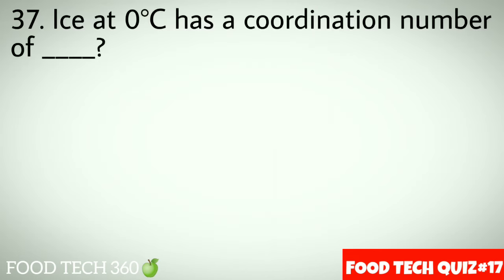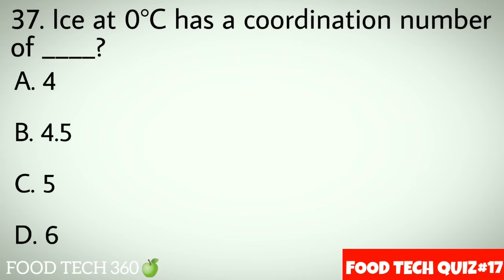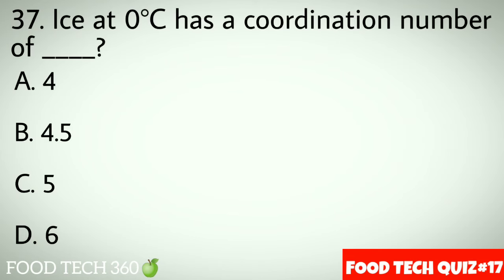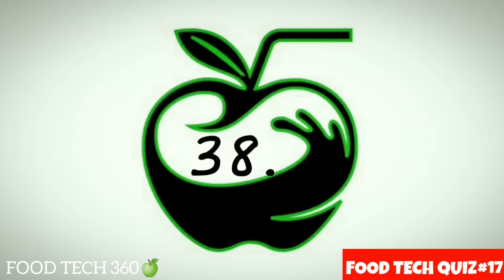Question number 37: Ice at 0°C has a coordination number of dash. Options: A. 4, B. 4.5, C. 5, D. 6. Correct answer: A. 4.